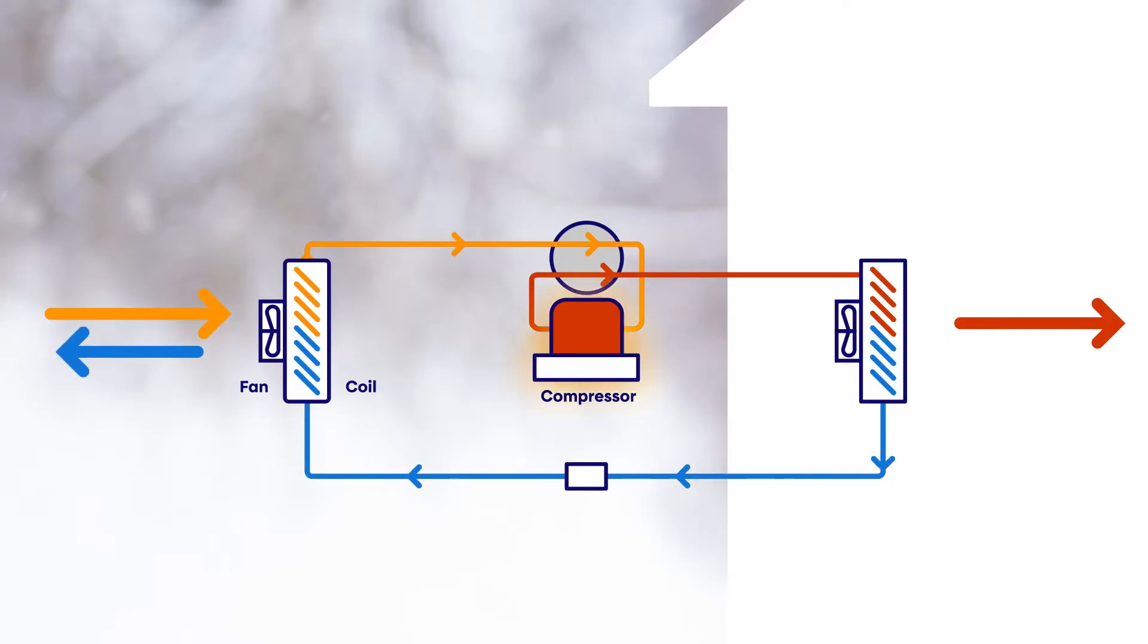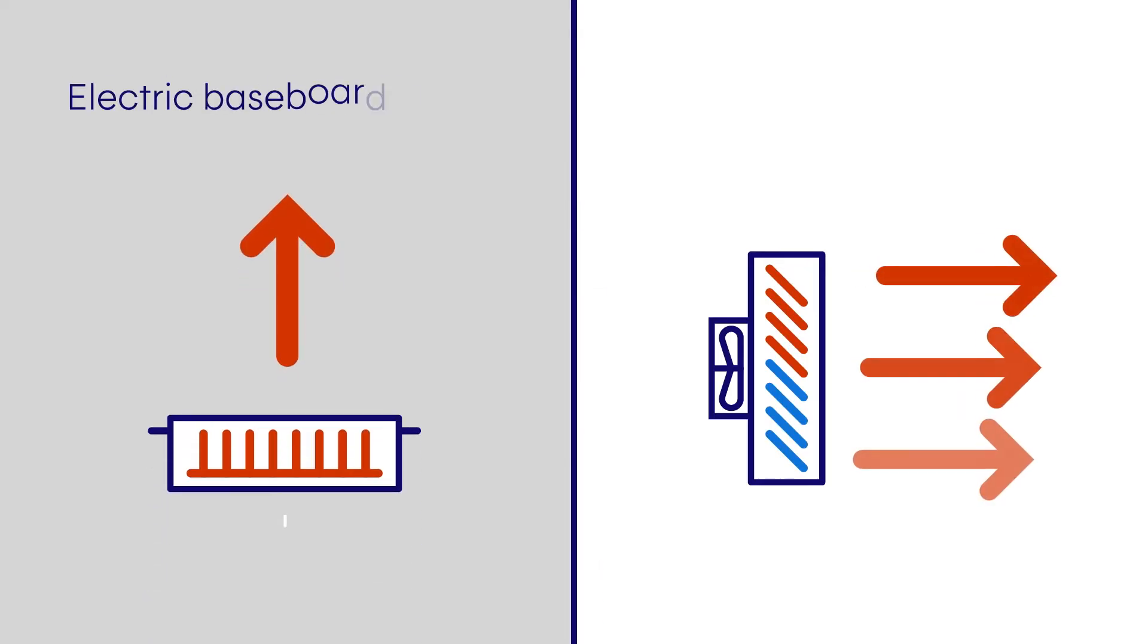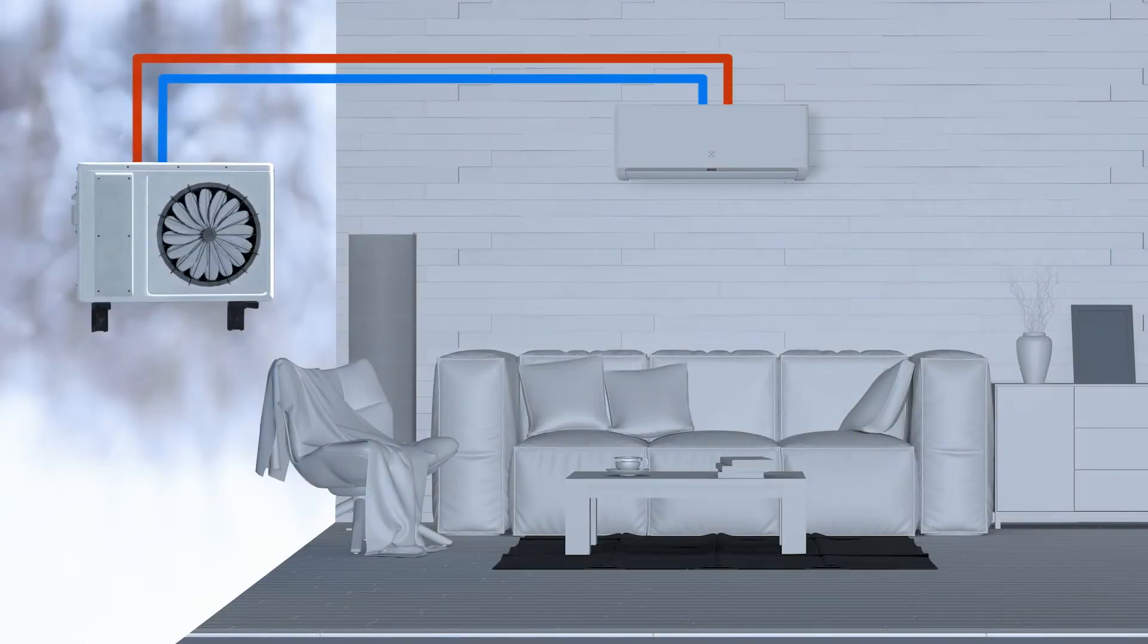It's mainly the heat pump's compressor that consumes electricity. Although it consumes the same amount of energy as an electric baseboard heater, a heat pump produces up to three times more heat. That's what makes the heat pump more energy efficient when it's in heating mode.